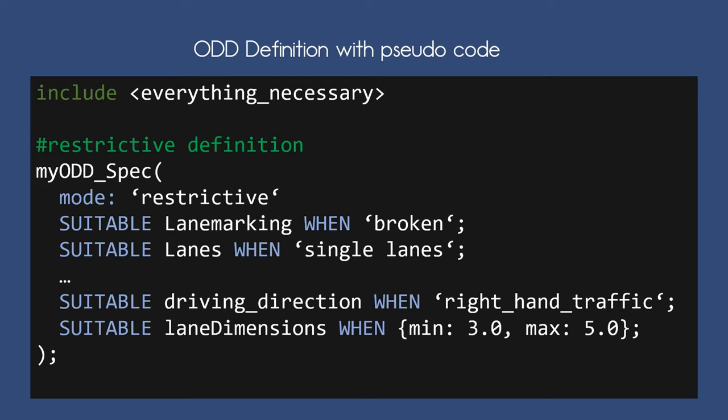So we allow the lane marking to be broken, we allow single lanes, we allow the driving direction to be right-hand traffic, and the lane dimension to be at least three meters wide and a maximum of five meters. Manufacturers need a lot of scenarios to test and validate their ADS. An ODD can help to select relevant scenarios in the development and validation process, saving time and effort.